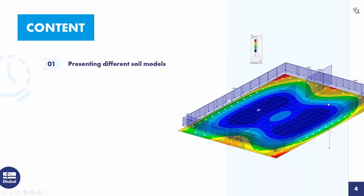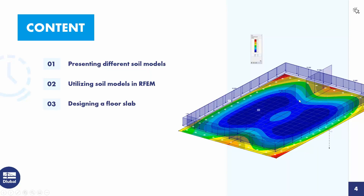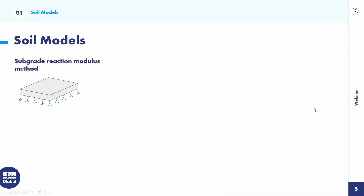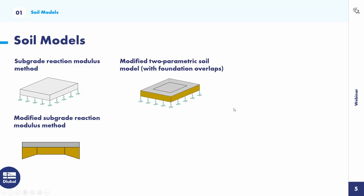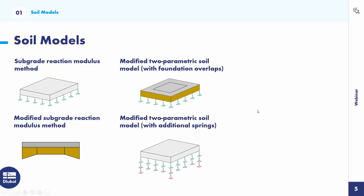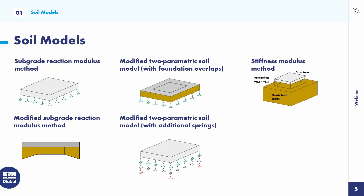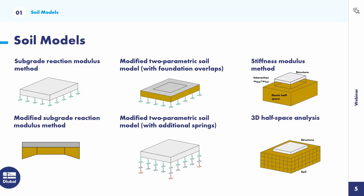The other way is to watch the entire webinar and then email your questions to info at global.com. To the agenda today: first I present different soil models in RFEM, then I utilize the soil models in RFEM. With a floor slab as the example for all the soil models, and at the end I design the floor slab in RFEM. The soil models covered are: the subgrade reaction modulus method, the modified subgrade reaction modulus method, the modified two-parametric soil model with foundation overlaps, the modified two-parametric soil model with additional springs, the stiffness modulus method, and the 3D half-space analysis.